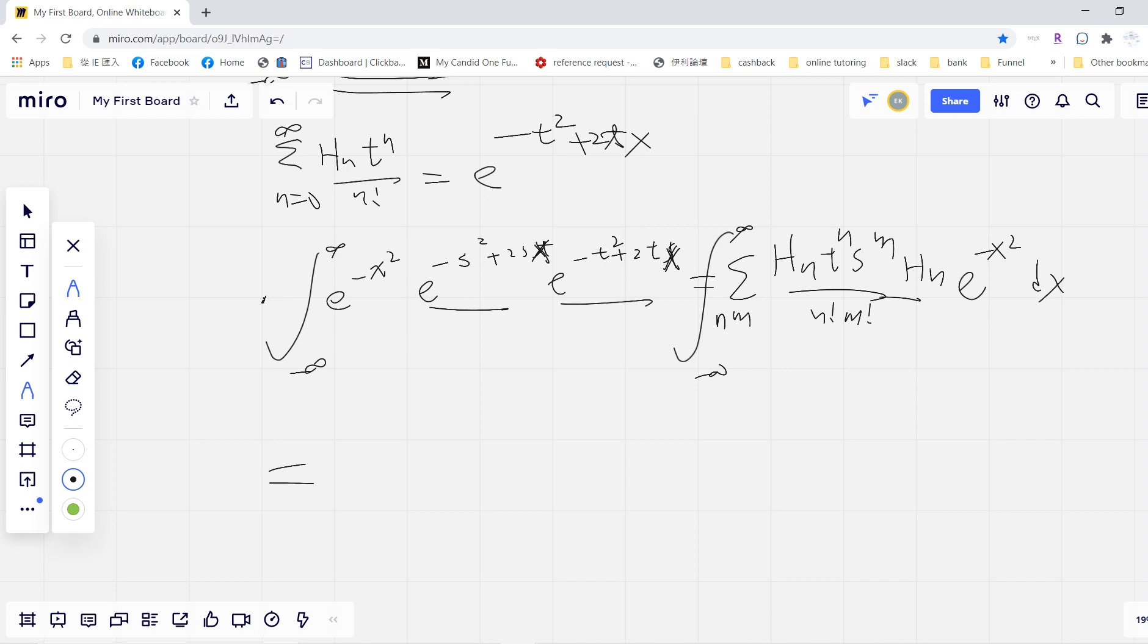Okay, so let's see. And then we know the orthogonality, right? So the left-hand side only exists as the sum of s^n t^n/(n!) times the integral of H_n squared e^{-x^2} dx. Now t and s are different, but we do the x integral, so only m equals to n survive.